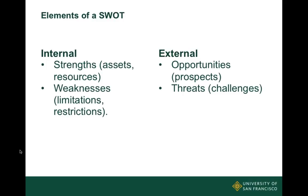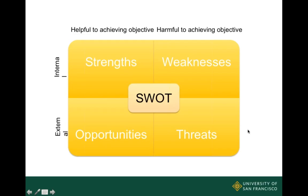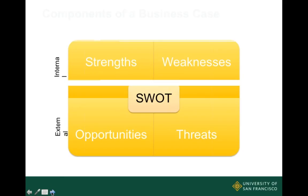Internally, look at your resources: we have simulators, space, people, and buy-in. Weaknesses might be politics, space issues, time, or money. External opportunities include becoming a center of excellence, becoming accredited — which brings business — increasing retention, decreasing errors, and increasing quality. Threats might be another sim center down the street, or challenges with getting medicine, nursing, and allied health to agree on what the program should look like. A SWOT is usually presented in four quadrants and should be included in your business case.